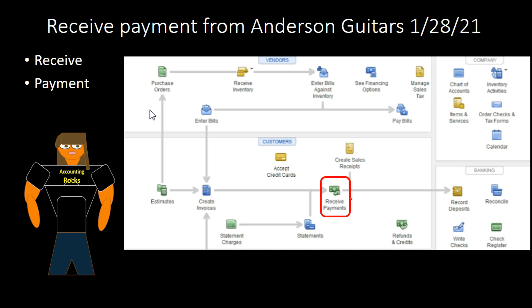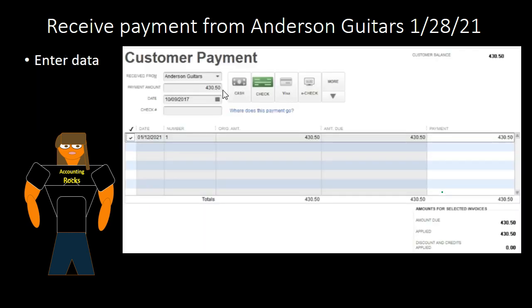We're going to receive the payment and then, at the end of the day, take that payment — probably a check — and deposit it into the bank using the record deposit function in QuickBooks. For the receive payment, we put in the customer name Anderson, and QuickBooks will find the invoice. We confirm the $430.50 check received in the mail. QuickBooks then performs the journal entry: it decreases accounts receivable and records the cash not into the checking account, but into an undeposited funds account.